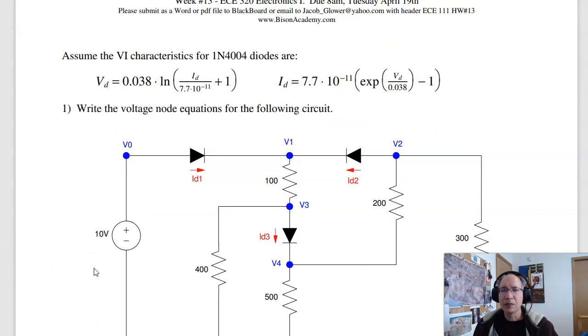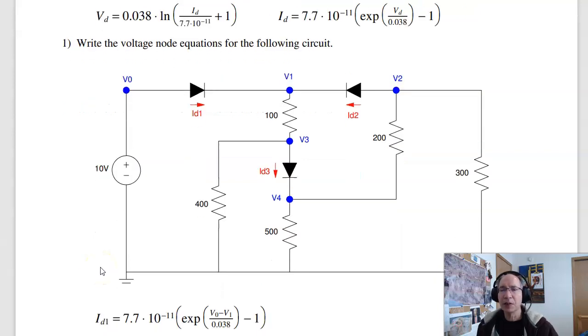Now, the first problem is to write the equations. That's kind of all important. If you don't get the equations right, the answer is not going to be right. This is typically what tests look like in 321 as well. On the test, I'll ask you to write the equations.